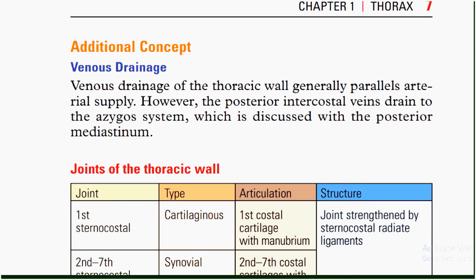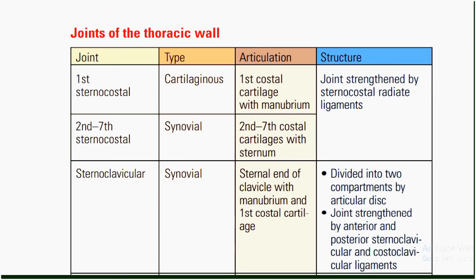Venous drainage of the thoracic wall generally parallels the arterial supply; however, the posterior intercostal vein drains to the azygos system, discussed in the posterior mediastinum. Joints of the thoracic wall: the first sternocostal joint is a cartilaginous articulation of the first costal cartilage with the manubrium. The second to seventh sternocostal joints are synovial joints articulating the second to seventh costal cartilages with the sternum, strengthened by sternocostal radiate ligaments.